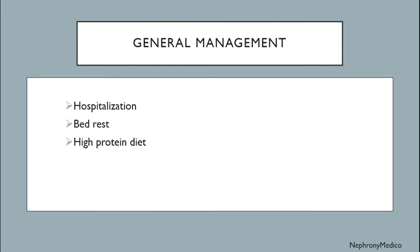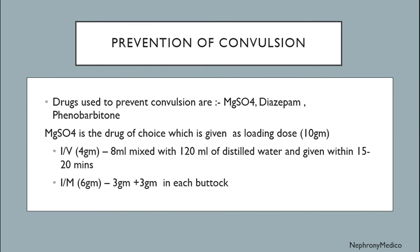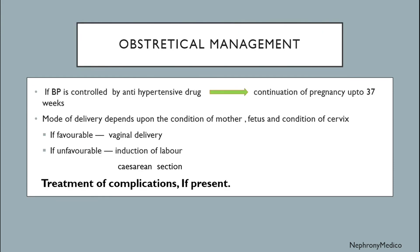General measures include hospitalization, bed rest, and high-protein diet. Control of hypertension is done by antihypertensive drugs — orally: alpha-methyldopa, nifedipine, labetalol; injectable: labetalol, hydralazine. Prevention of convulsion: drugs used include magnesium sulfate, diazepam, and phenobarbitone. MgSO4 is the drug of choice, given as a loading dose of about 10 grams.